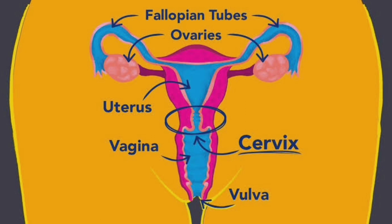So guys, first of all, what happens to the cervix? What happens to the uterus? When ovulation changes occur, the cervix changes at that time. The cervix goes up, it becomes a little open, and it becomes a little bit soft. This is what happens when ovulation changes are occurring in the cervix.